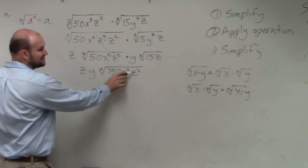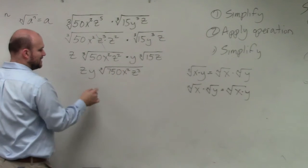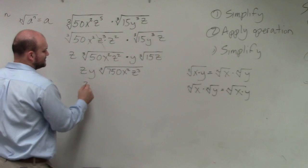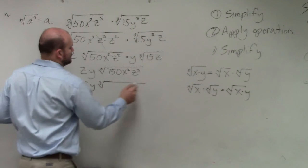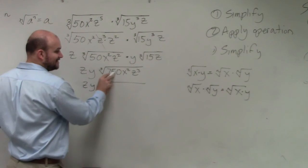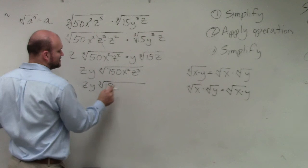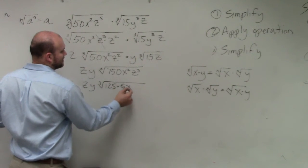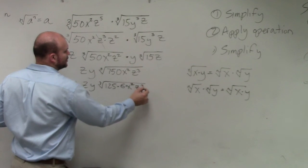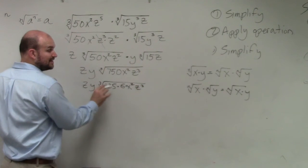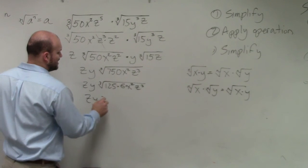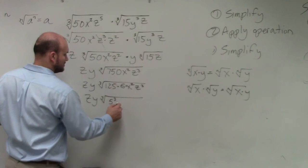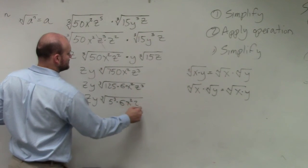So therefore, I can also, I can take the cube root of z cubed, right? Yes? Well, let's do this at the end. So I do zy cube root. I can do this as 125 times 6 times x squared z cubed. I can rewrite 125 as 5 cubed.